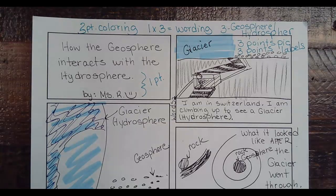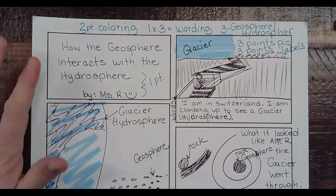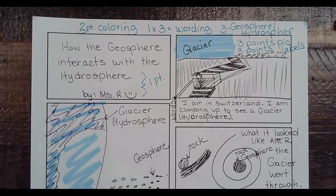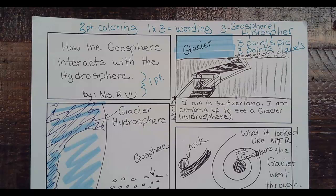I actually saw the other day — and this is not geosphere interacting with the hydrosphere — but somebody took a picture at the beach, and the sand was frozen, and when the wind came it made little sand castle-type things with just the sand from erosion. So cool looking.